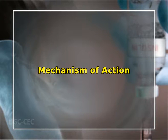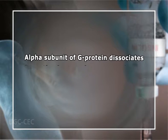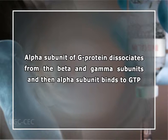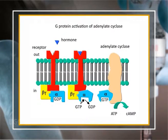Regarding the mechanism of action of glucagon: the hormone combines with a membrane-bound receptor. This activates the GDP-bound G protein by converting it into the GTP form. The alpha subunit of the G protein dissociates from the beta and gamma subunits, and the alpha subunit binds to GTP. The GTP-G protein in turn activates adenyl cyclase.